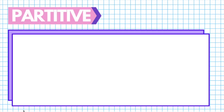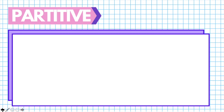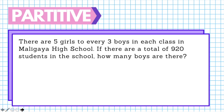Now let's look at partitive proportion. Partitive proportion is when a whole is divided according to a certain ratio. For example: there are five girls to every three boys in each class in Maligaya High School. If there are a total of 920 students in the school, how many boys are there? Here, the 920 students will be divided into two sets — girls and boys — according to the ratio 5 to 3, making this a partitive proportion.